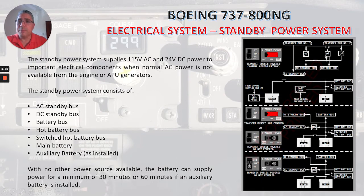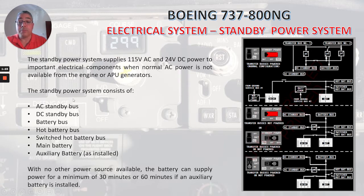The standby power system supplies 115 volts AC and 24 volts DC power to important electrical components when normal AC power is not available from the engine or APU generators. The standby power system consists of the AC standby bus, DC standby bus, battery bus, hot battery bus, switched hot battery bus, main battery, and auxiliary battery if it is installed.